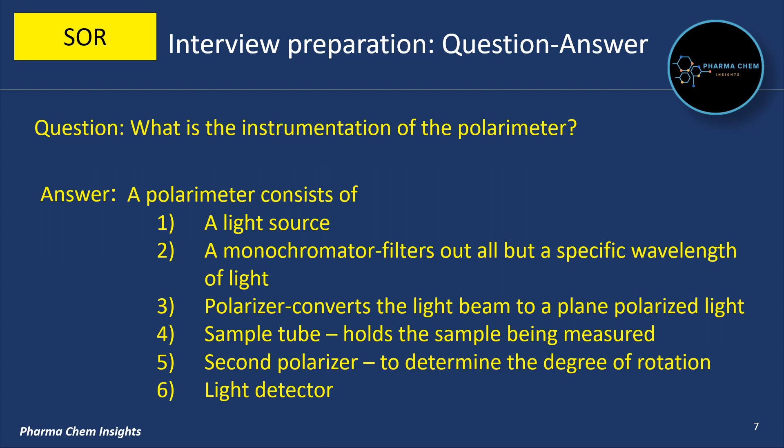Fourth is a sample tube that holds the sample which is to be measured. Fifth, a second polarizer to determine the degree of rotation. Sixth, a light detector.